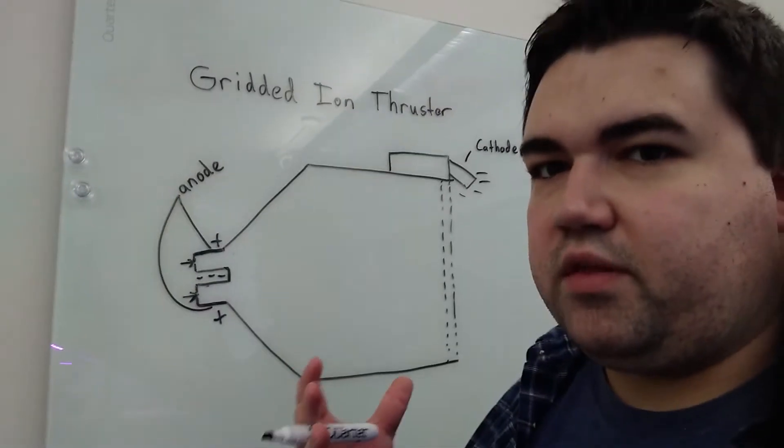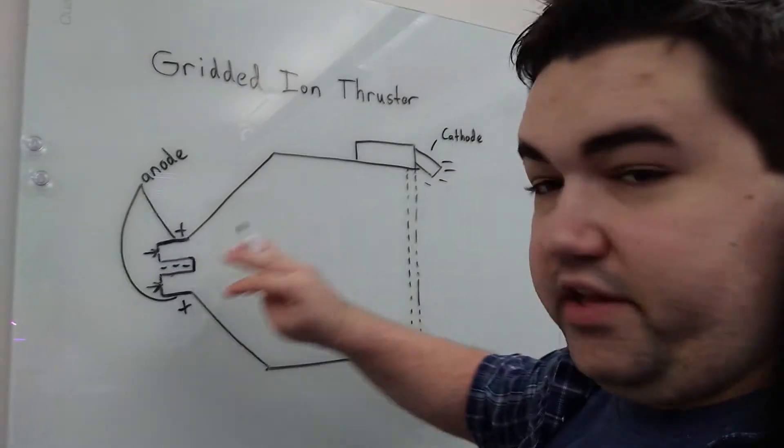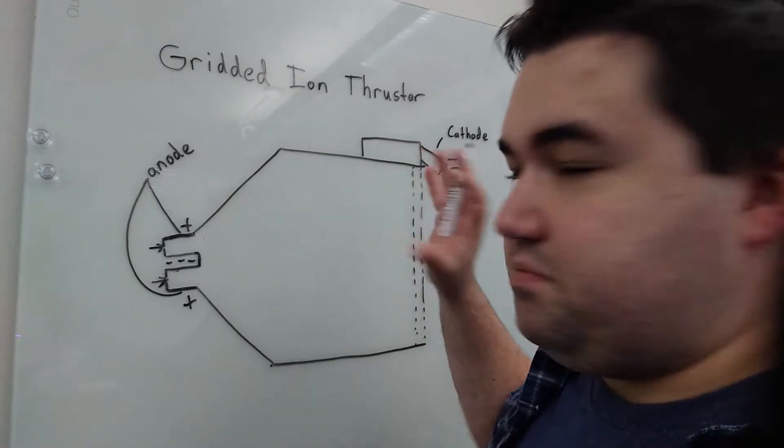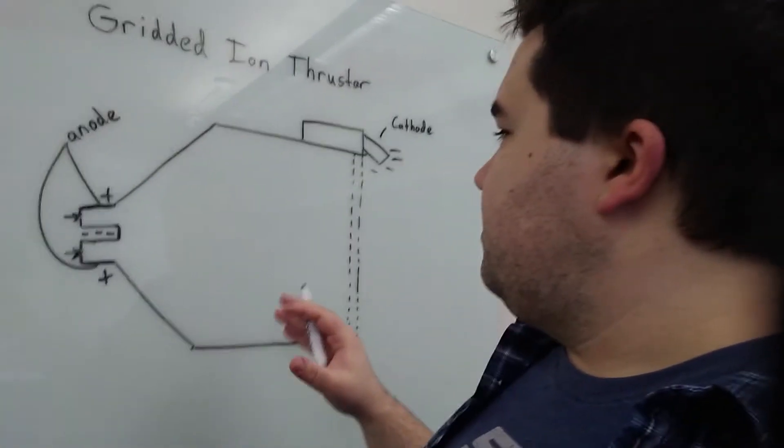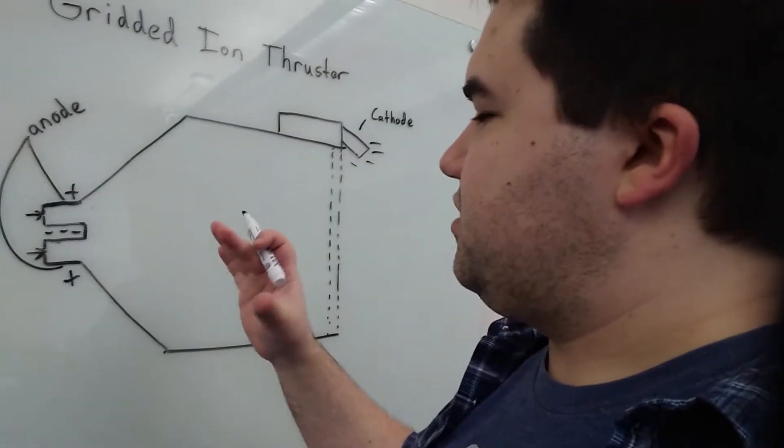Like I said before, the basic components of a plasma thruster that you need are a really strong electric field and some source of ions. So here is our gridded ion thruster. It's essentially a basic ion thruster.